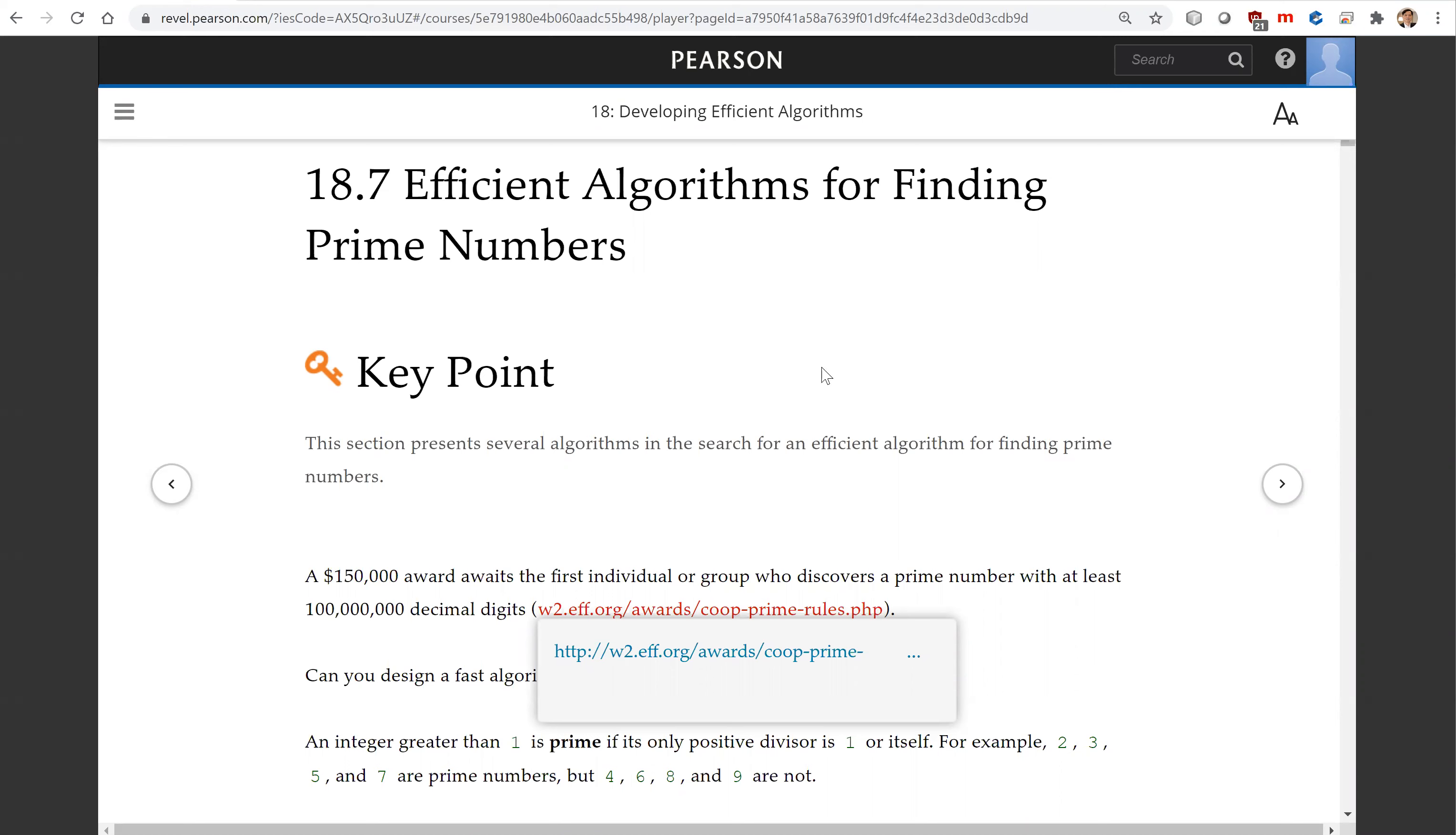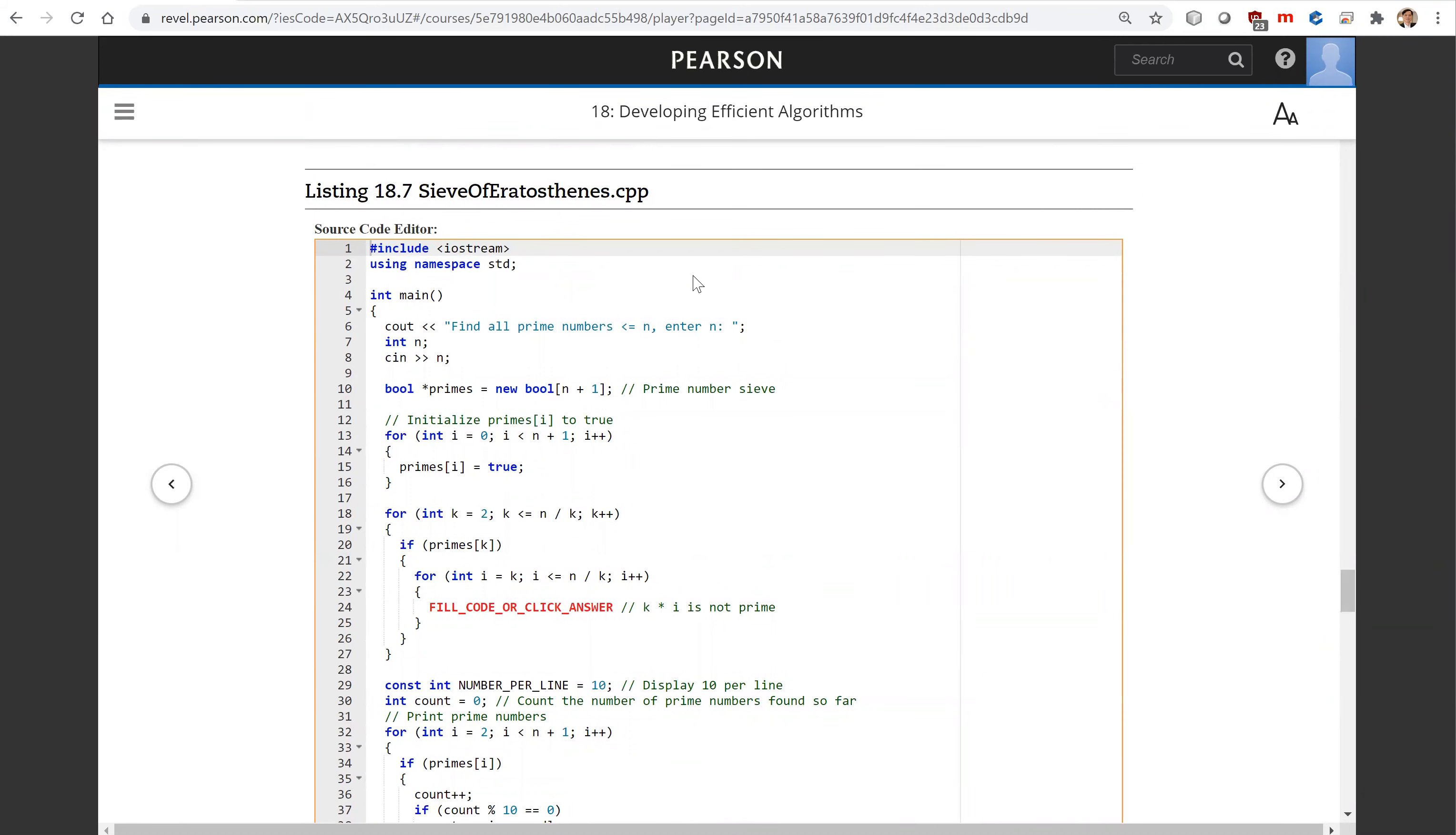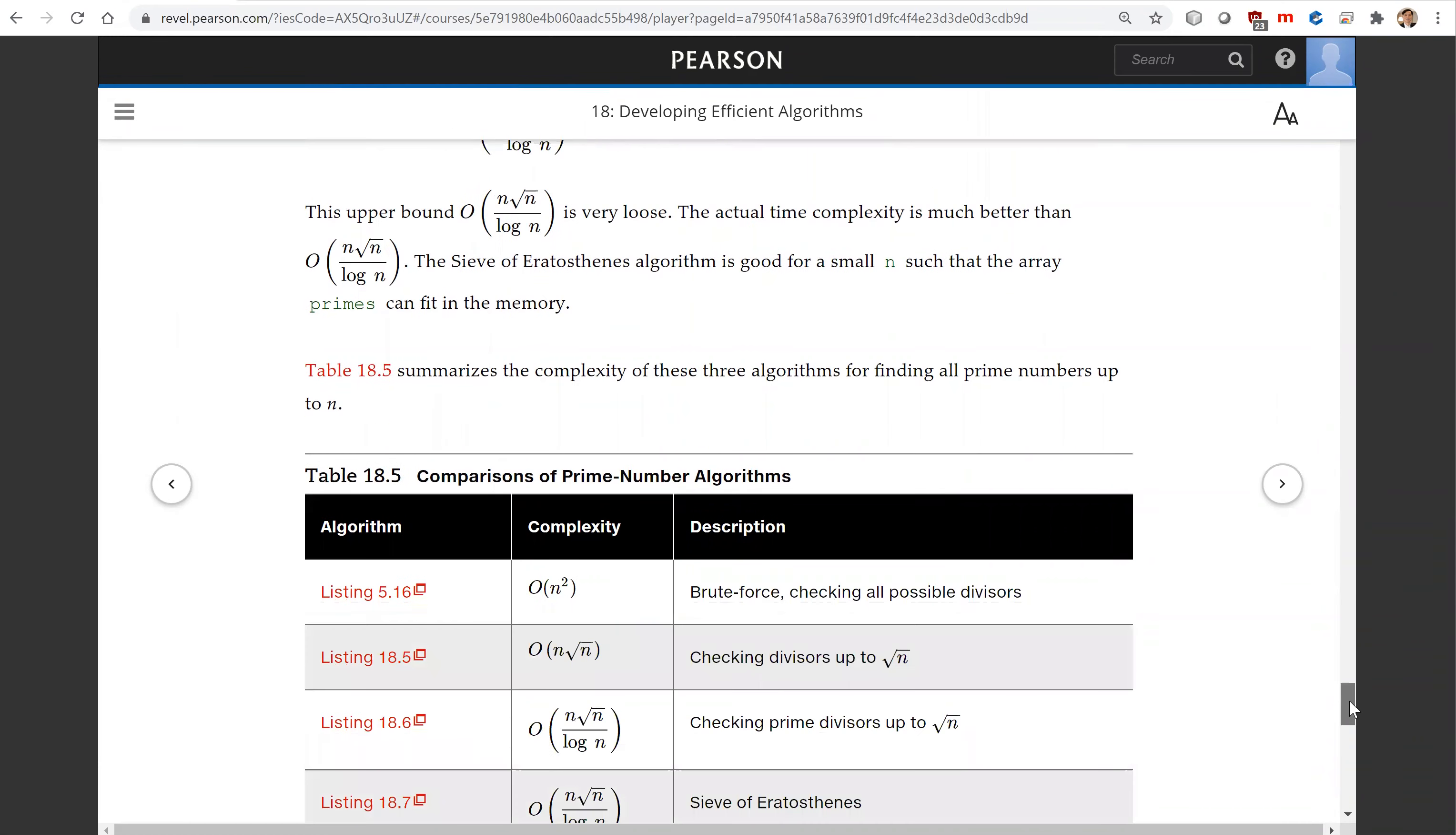That is all for this section. I'm going to leave the details for you to study. You can look here and we have all these algorithms, including the last one which uses the Sieve of Eratosthenes algorithm. That's also a very interesting algorithm for finding prime numbers.